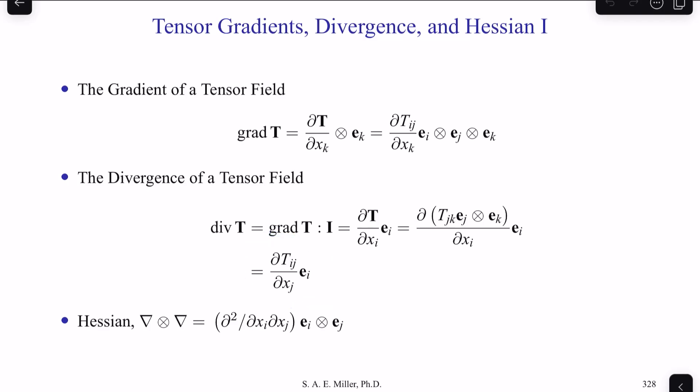Finally, the Hessian is ∇ ⊗ ∇, which is ∂²T_i/∂x_i∂x_j e_i ⊗ e_j.